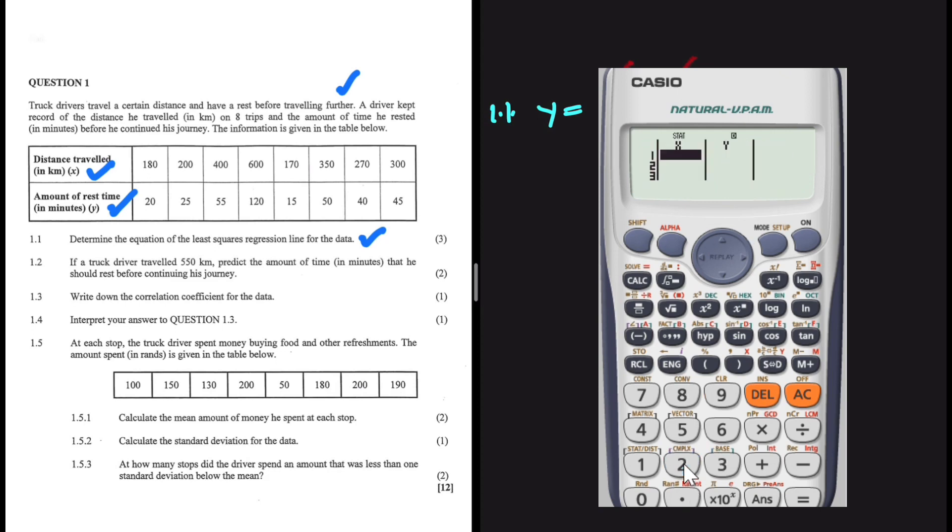When you do that, you're going to have this table. You enter your x variables, and you enter your y. So let's go ahead and punch in the x. We have 180 followed by 200, 400, 600, 170, 350, 270, and 300.